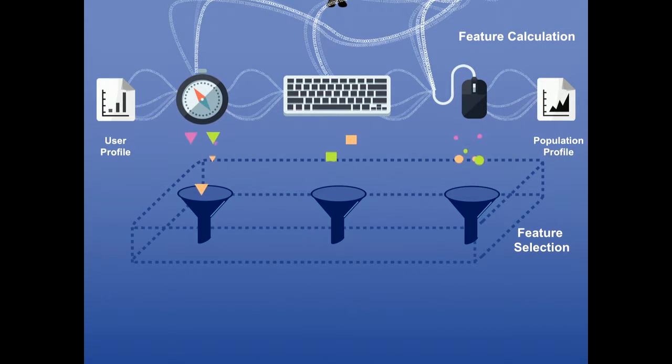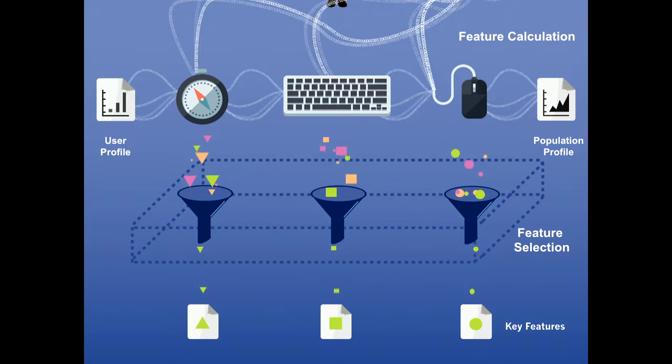Then as we're collecting all of those features, they're going through various different funnels, and those funnels are looking to understand what is the best feature set for this particular user at this point in time. As you can imagine with any model, certain data points become rather useless if there's a high collision rate. So we might find that a certain data point is giving us 100% match across all users. Well, that data point isn't very useful for that particular evaluation. So we're taking all those data points, all of those features, things like the accelerometer readings, type speed, various things like that. We're filtering those through and determining what the key features are for those users.